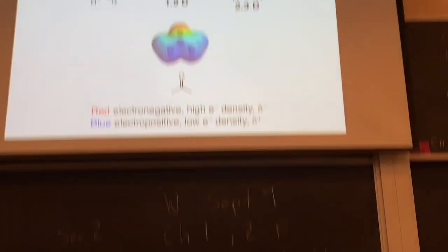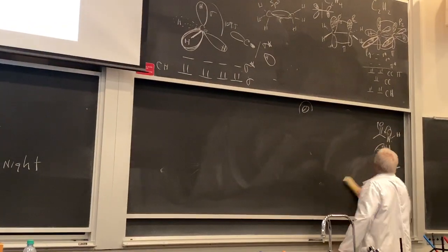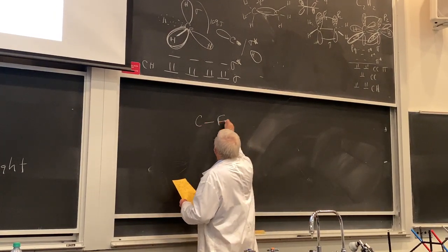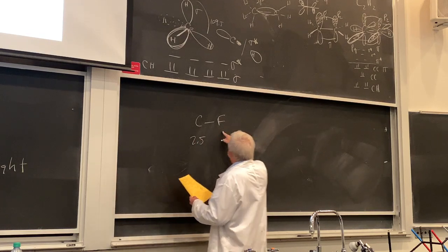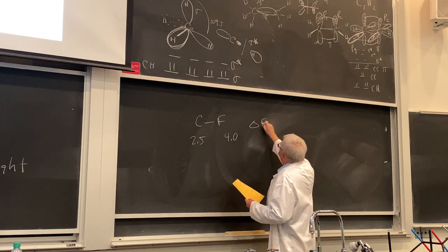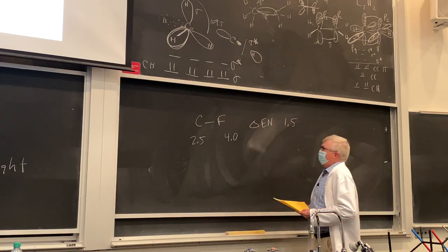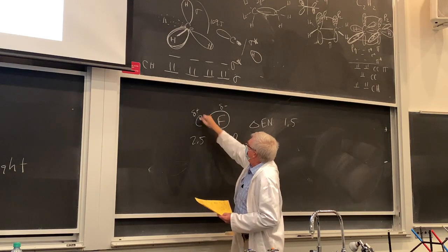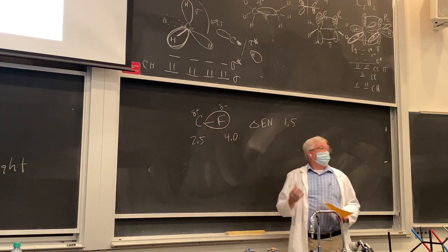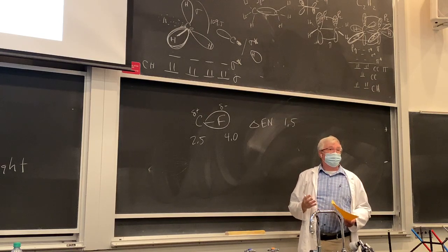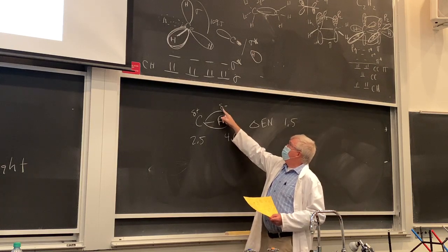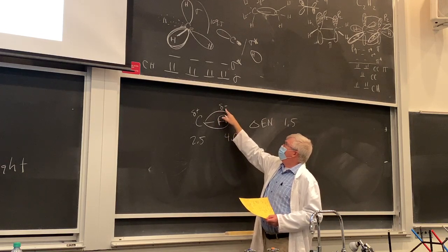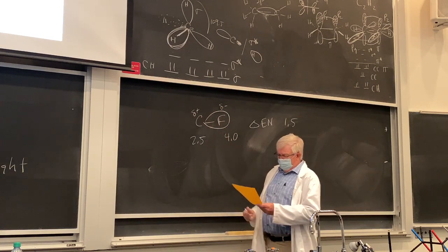For a carbon-fluorine bond, carbon is 2.5 on the Pauling scale and fluorine is 4.0 — the difference in electronegativity is 1.5. We say that's a polar covalent bond, and the electrons are spent mostly on the more electronegative atom. Fluorine is tugging on those electrons. The delta values refer to charge — at any given time there's more electron density on the more electronegative atom: partially negative at fluorine, partially positive at carbon.